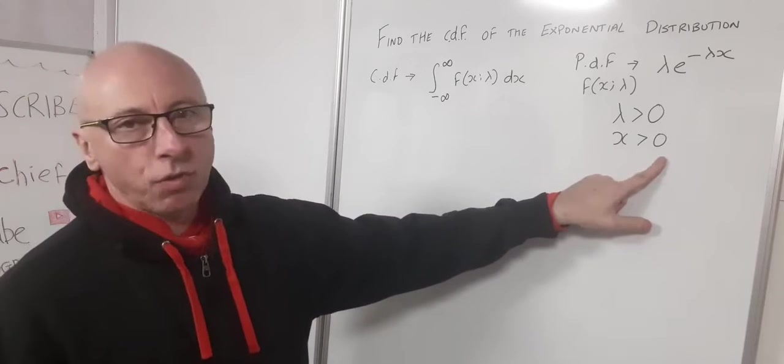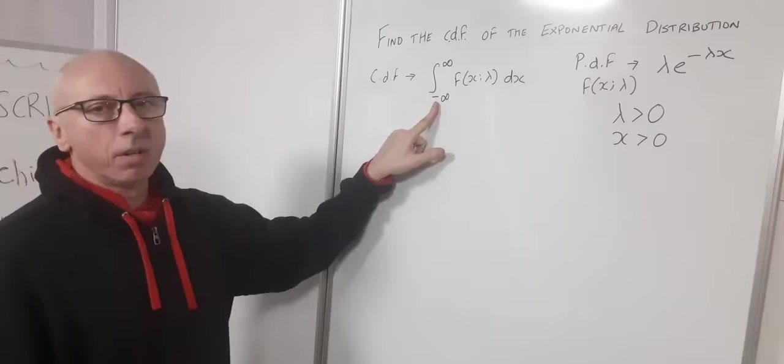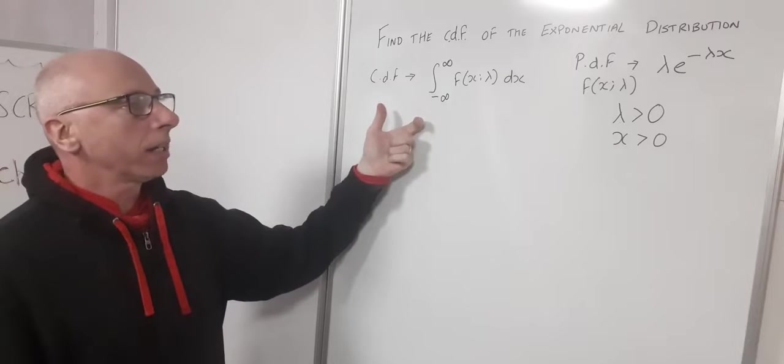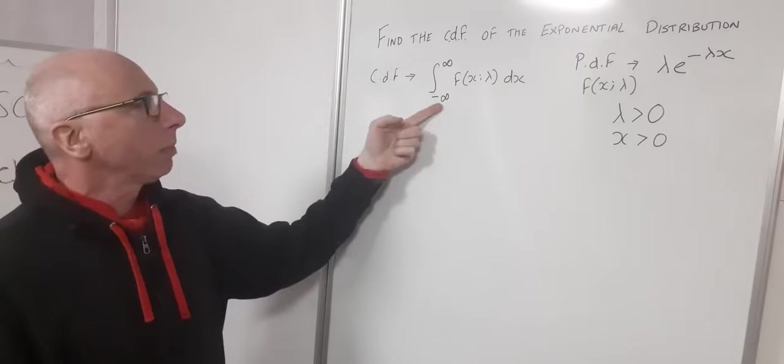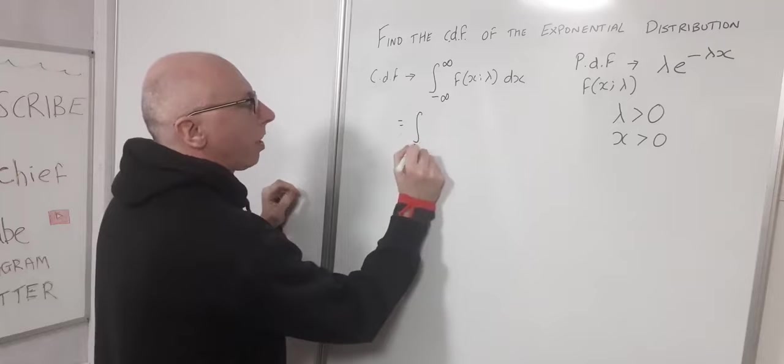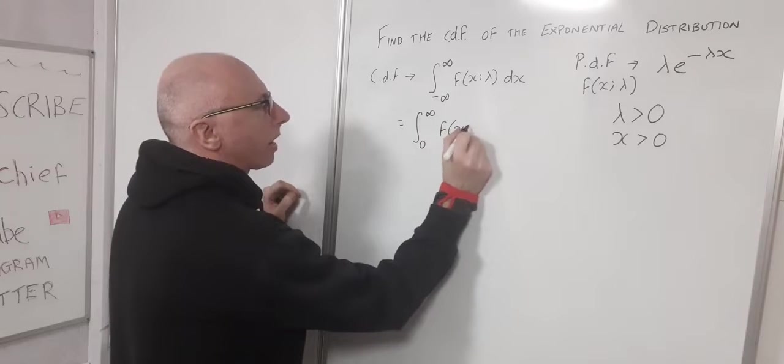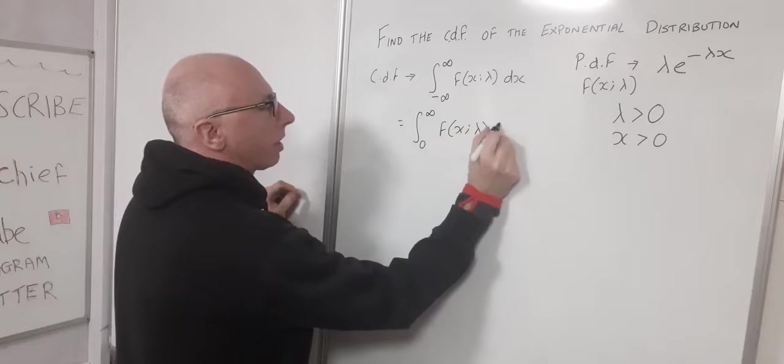Now x is always greater than zero. So from negative infinity to zero, the integral will be zero anyway. So we can just change that to suit this function. So then we would have from zero to infinity, f of x given lambda dx.